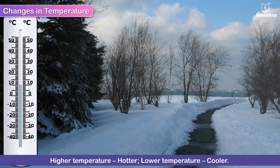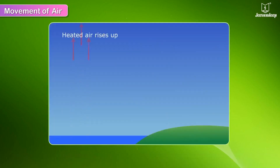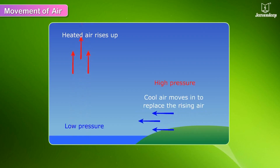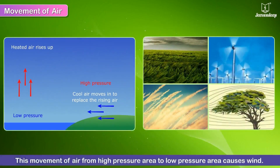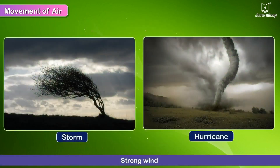Thus it is generally hotter at noon than in the mornings and evenings. The higher the temperature, the hotter it is, and the lower the temperature, the cooler it is. Air pressure is the weight of air as experienced from all directions. On land, when air heats up it rises and creates an area of low pressure on the earth's surface. The surrounding cool air moves in to replace this rising air, coming from areas where the pressure is high. This movement of air from high pressure area to low pressure area causes wind. The wind is sometimes a light pleasant breeze; at other times it can be very strong and can cause a storm or a hurricane.